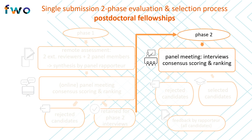We now arrive at the second phase of the selection process, which is the interview. The FWO invites the candidates selected in step one to a face-to-face meeting with the panel in Brussels. During this meeting, the focus is mainly on the qualities of the researcher, including the extent to which they master the project and have an appropriate scientific attitude. Each interviewee receives a new score for the candidate criterion and, where necessary, project scores are adjusted as well. This leads to a final ranking of candidates, which determines who is funded and who is not.